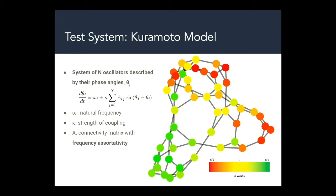The network that we're using has frequency assortativity which basically means that similar natural frequencies are more likely to have connections. You can see that because the colors are clustered.